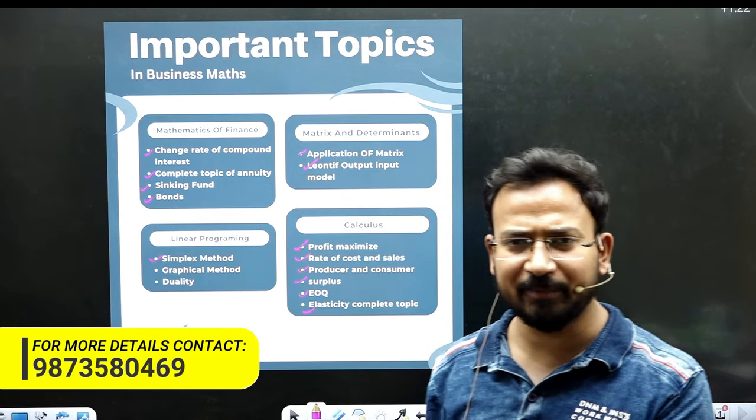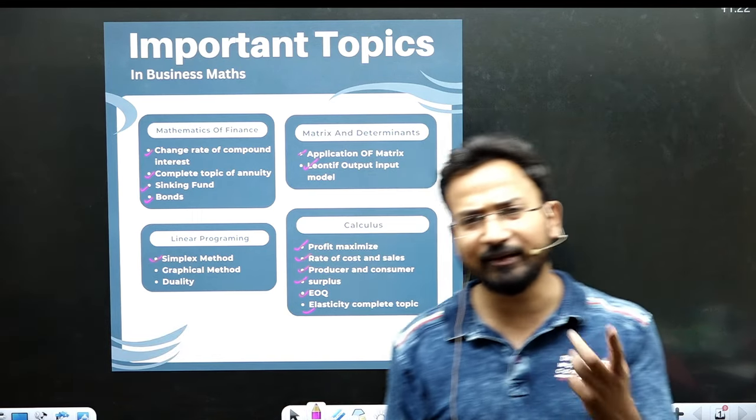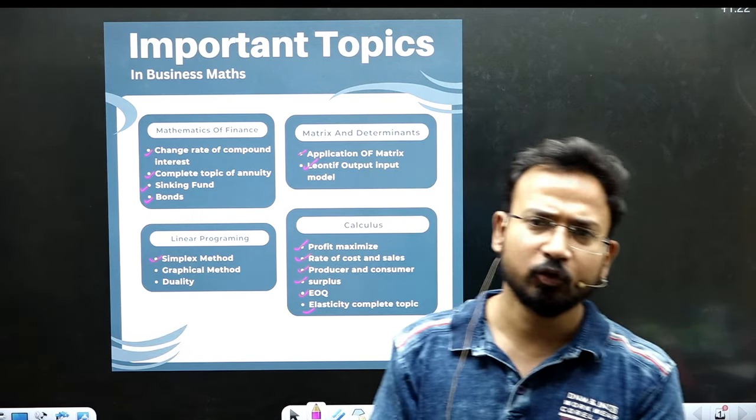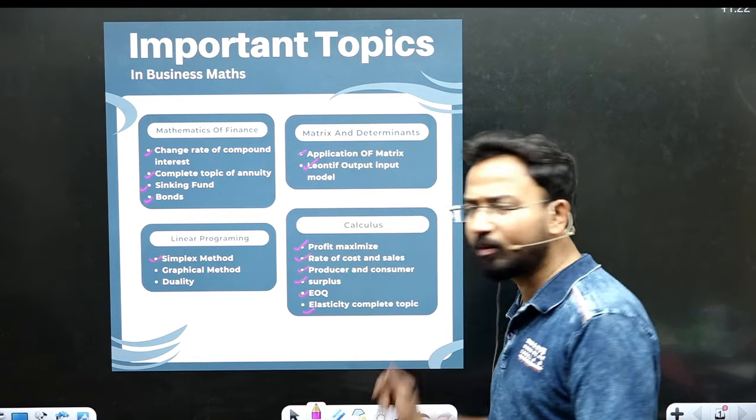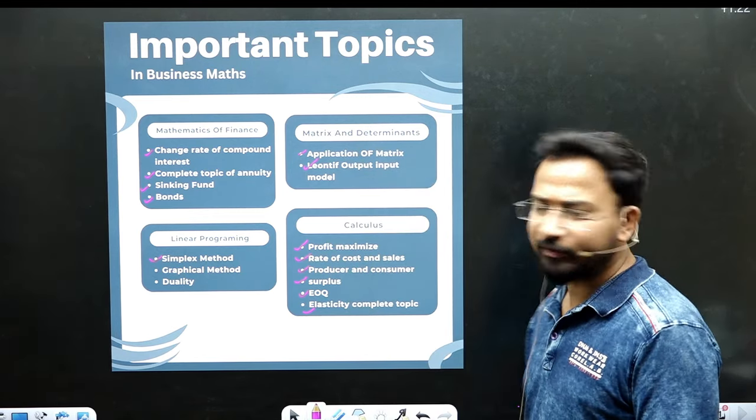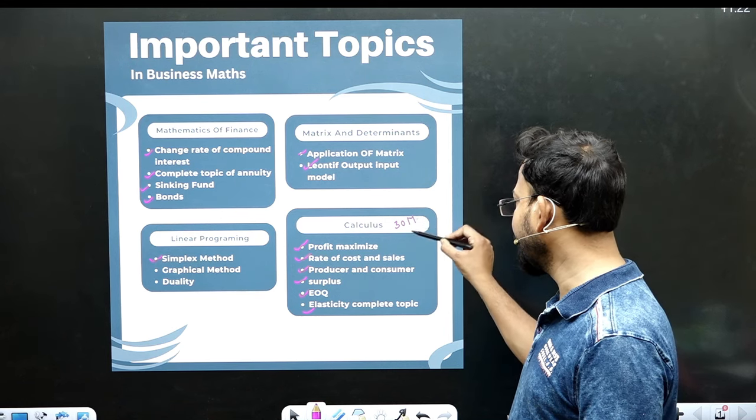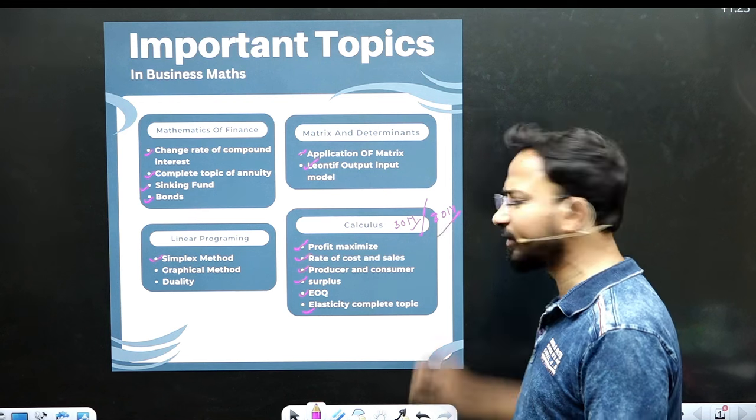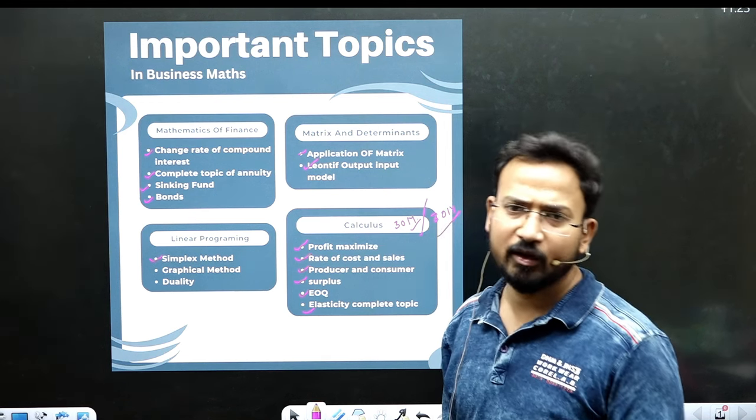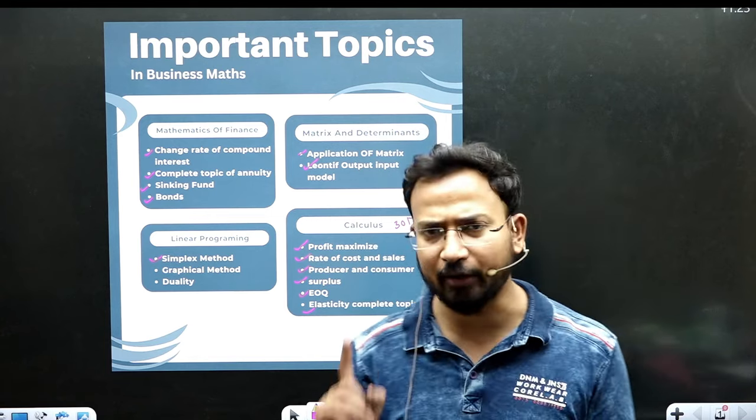In mathematics and determinants, you cannot do one part. In linear programming, you cannot do one part. These are such problems. But it is easy to do calculus. So if you think that you have to take 30 marks, you will have to secure 30 marks. If you have to get 25, you will have to not skip this topic.